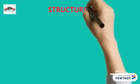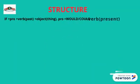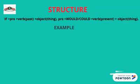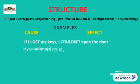Structure and Examples — Cause and Effect: If I lost my keys, I couldn't open the door. If you had more time, you would do more exercise. If they didn't go to bed so late, they wouldn't be so tired in the morning.